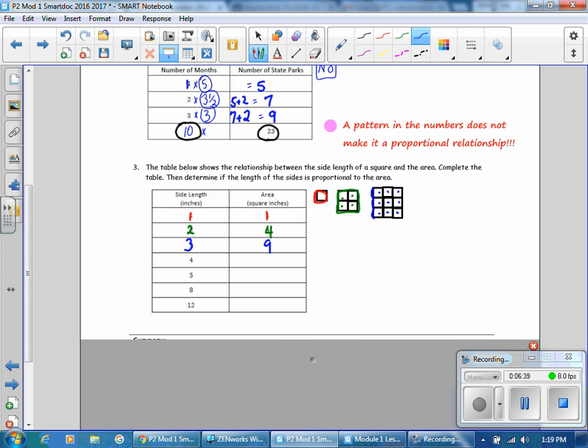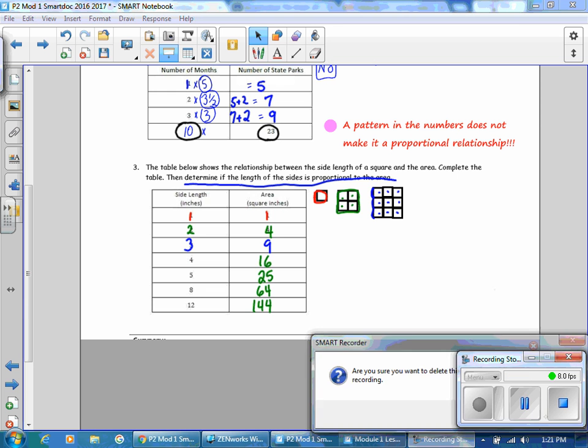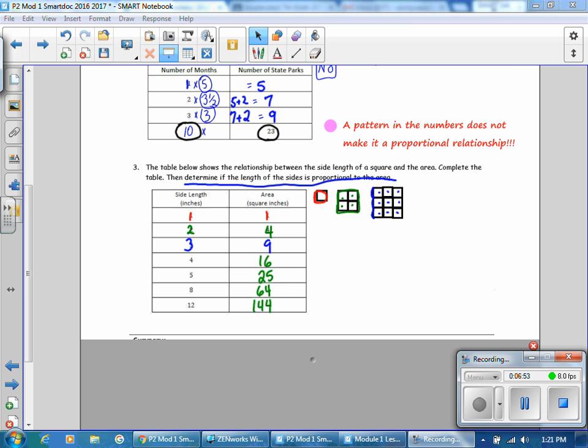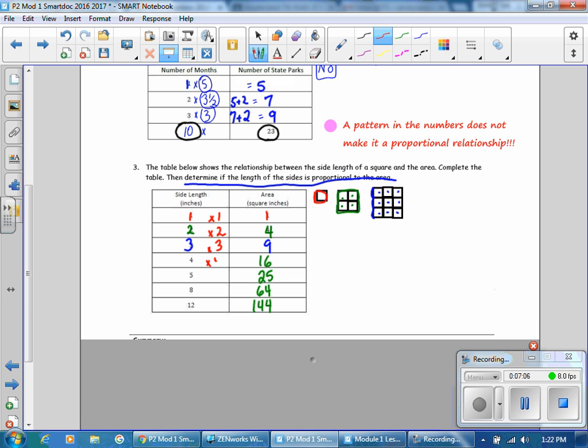Complete the chart. And then determine if the length of the sides is proportional to the area. Pause the video while you figure this out. So your chart filled in, we notice now that the multiplier here is one. The multiplier here is two. The multiplier is three. The multiplier is four. Because there is a different multiplier for each pair, this is not proportional.